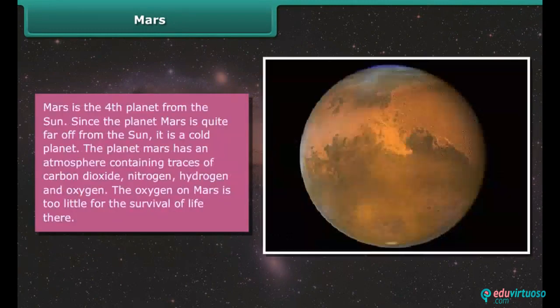Mars is the fourth planet from the sun. Since the planet Mars is quite far off from the sun, it is a cold planet. The planet Mars has an atmosphere containing traces of carbon dioxide, nitrogen, hydrogen, and oxygen. The oxygen on Mars is too little for the survival of life there.